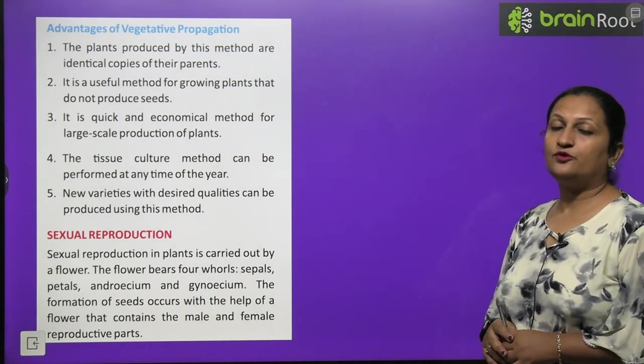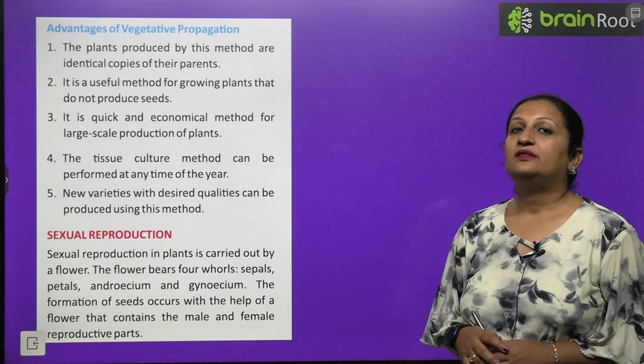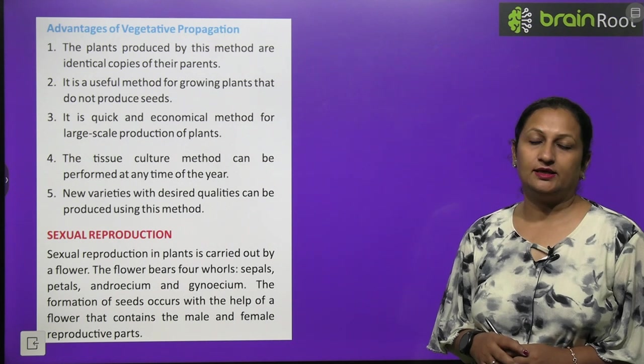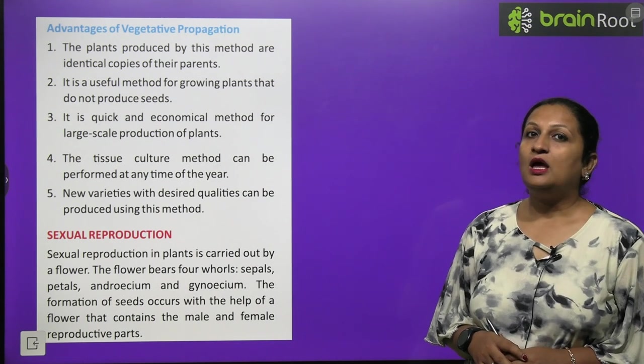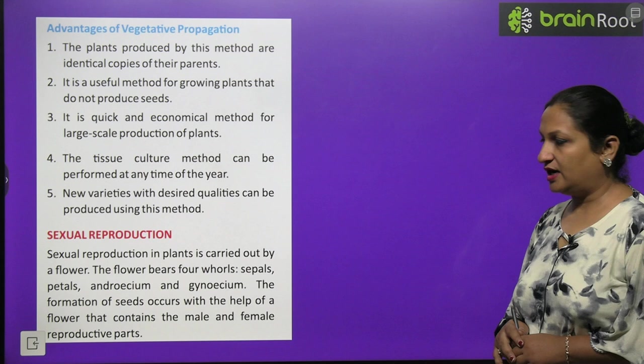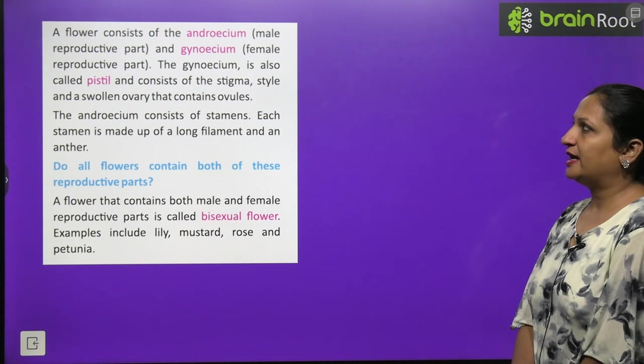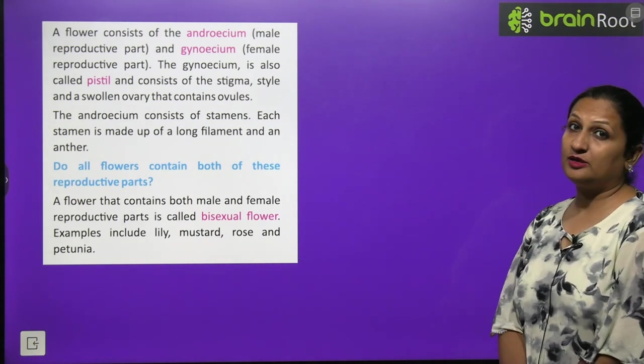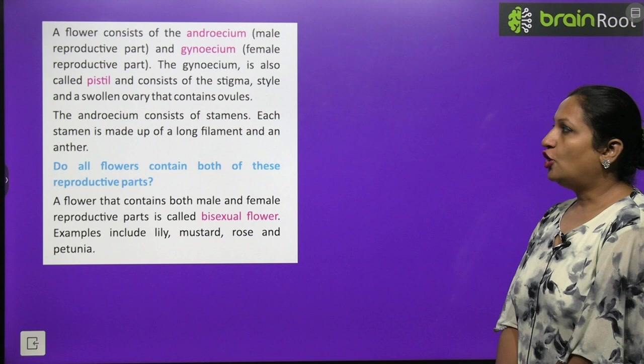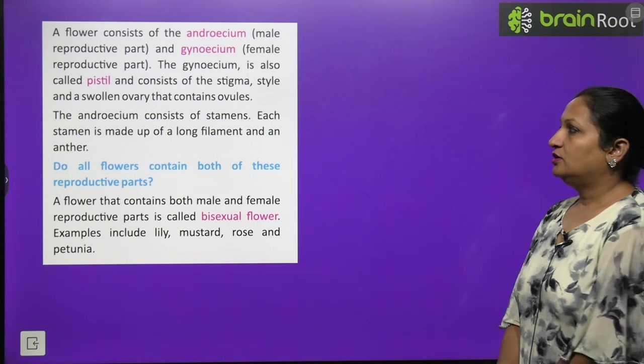If we talk about flower, we can divide the flowers into four whorls. First we have sepals which is green color. Then we have petals which we call corolla. They are brightly colored and sweet scented. Then we have male part which we call androecium. And then we have female part which we call gynoecium. The formation of seeds occur with the help of flower that contains male and female reproductive parts. A flower consists of androecium and gynoecium. Gynoecium we also call pistil or carpel. It has 3 parts: stigma, style and ovary that contains ovule. And androecium we also call stamen. It has 2 parts: anther and a long filament where pollen grains are present.